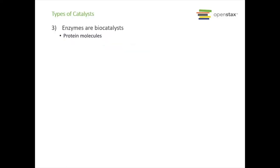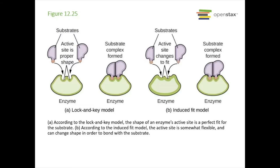The last type of catalyst is an enzyme. Enzymes act as biocatalysts — they are protein molecules with a specific shape. Certain substrates can fit into an enzyme's active site, and those substrates click into the active site to form a complex, do their reaction, and then leave. In the lock-and-key model, the fit is rigid. In the induced fit model, the active site is flexible and can change shape to bond with the substrate.